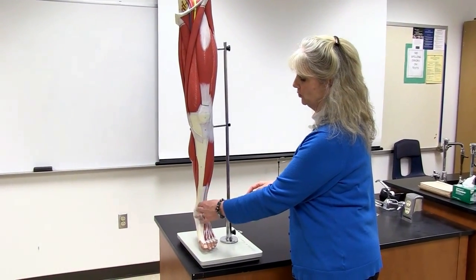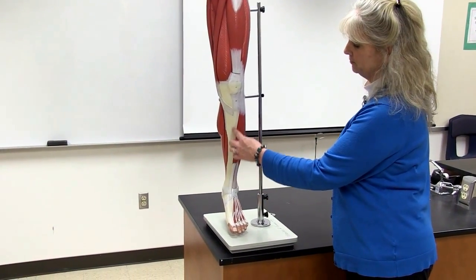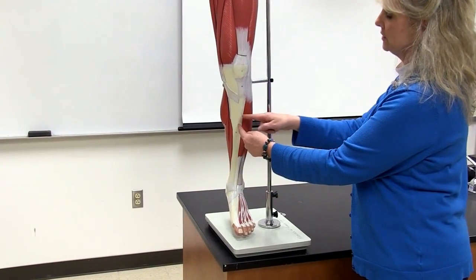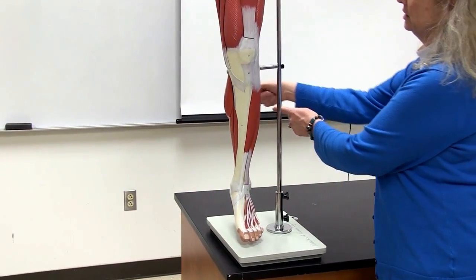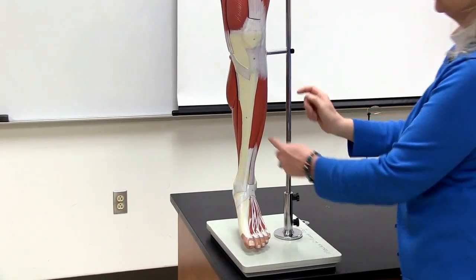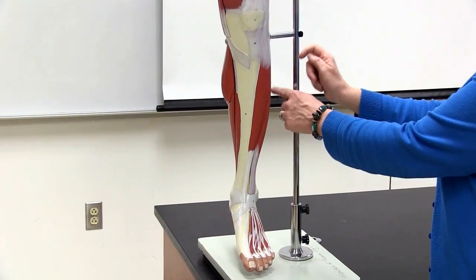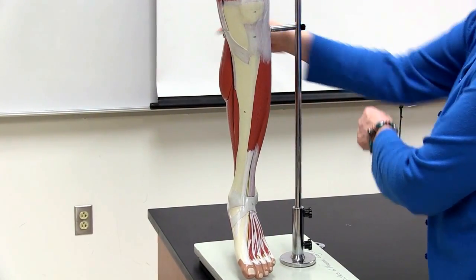This is your tibia bone, so that would be your shin bone. And we're going to start here and then go around the leg to the other side so that you can keep up and try to study these in order as you go around the leg.